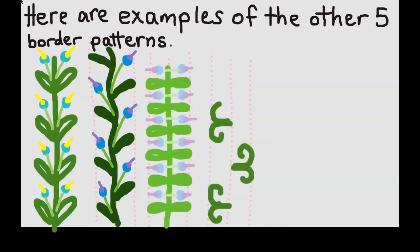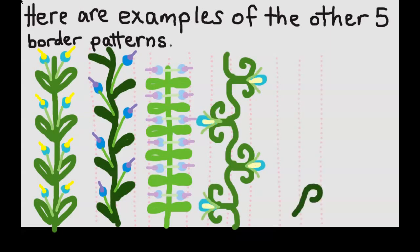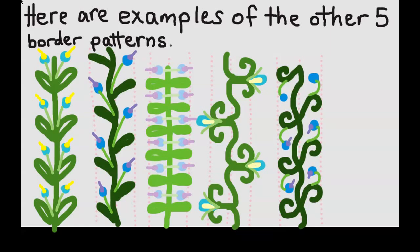This one has mirrors and a glide reflection. And the last one here has only rotation symmetry and translation symmetry.